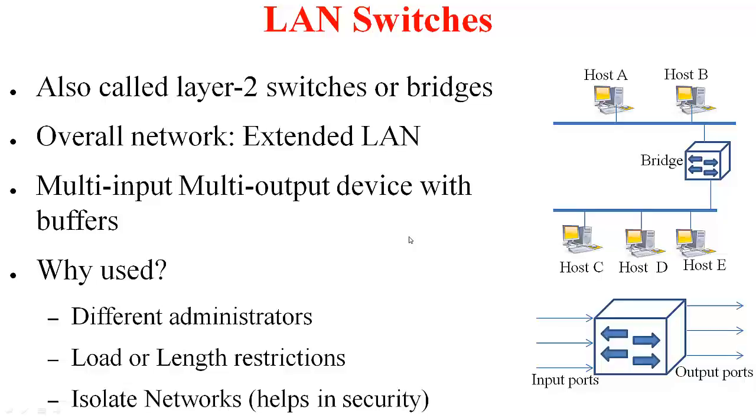The devices that do switching at layer two are called bridges, also called layer two switches. So, here this bridge is interconnecting two Ethernet segments, thereby extending the local area network. So, that is why this is called extended LAN. So, there is LAN 1 and this is LAN 2 and by interconnecting them, now we have one big extended LAN.